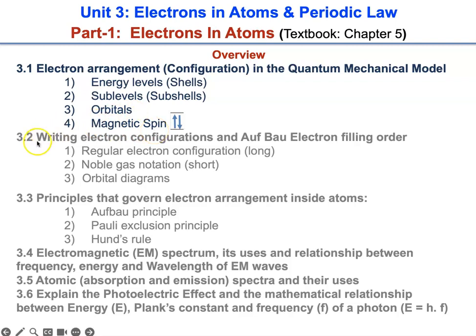In 3.2 we are going to learn how to write the arrangement or zip code of electrons and figure out the order in which electrons fill according to the Aufbau principle. There are three subtopics: regular electron configuration, noble gas, and orbital diagrams. In 3.3 we are going to cover principles that govern electron arrangement inside atoms — three laws that dictate how electrons fill inside atoms in shells, subshells, and orbitals: the Aufbau principle, Pauli exclusion principle, and Hund's rule. We will also learn how to write electron configurations.